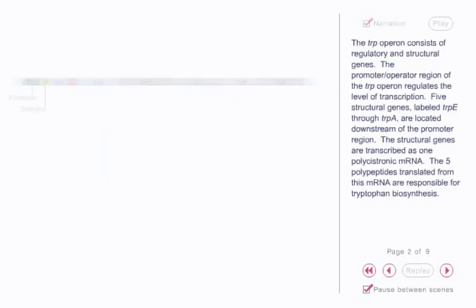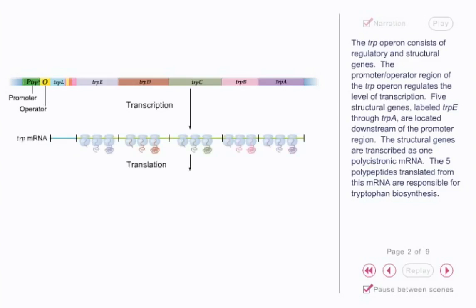The trp operon consists of regulatory and structural genes. The promoter-operator region of the trp operon regulates the level of transcription. Five structural genes labeled trpE through trpA are located downstream of the promoter region. The structural genes are transcribed as one polycistronic mRNA. The five polypeptides translated from this mRNA are responsible for tryptophan biosynthesis.